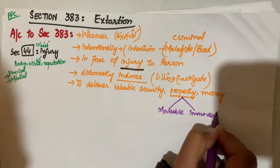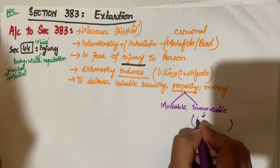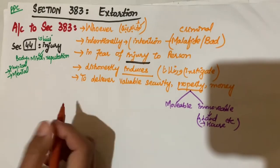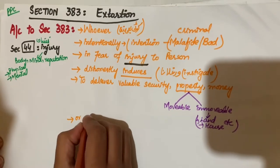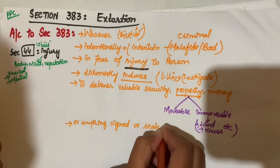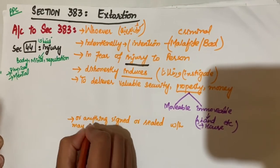Property humare paas movable bhi ho sakti hai aur immovable. Immovable mein kaun si aati hai - land, houses, etc. Or anything signed or sealed which may be converted into property or money.